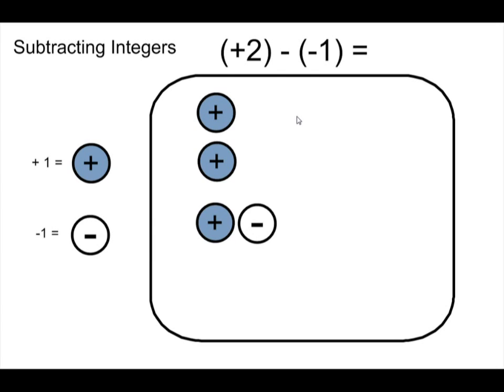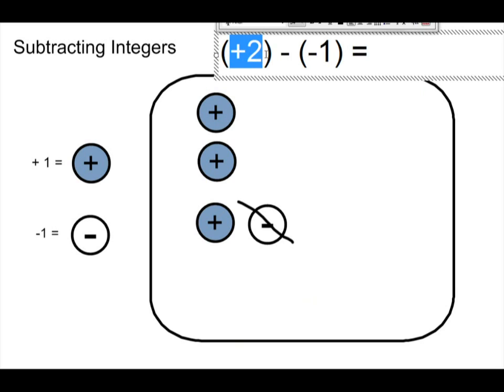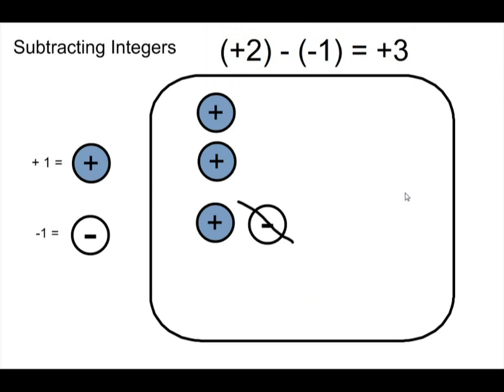It's still positive 2, but now I can take away the negative 1 like it's telling me. And I'll just cross it out to keep this consistent. We'll cross it out to say we've taken it away. Goodbye. What am I left with? Positive 3. So there you have it. Positive 2 take away negative 1 gives us positive 3.